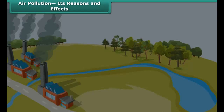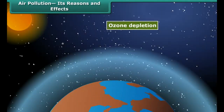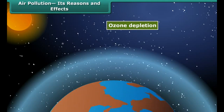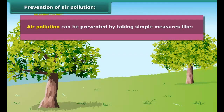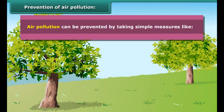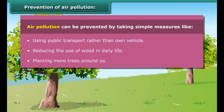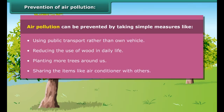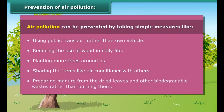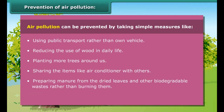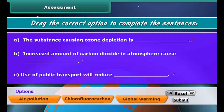Air pollution also creates global problems such as ozone depletion by gases like chlorofluorocarbon and global warming by carbon dioxide. Air pollution can be prevented by using public transport rather than a personal vehicle, reducing the use of wood in daily life, planting more trees, sharing items like air conditioners, preparing manure from dried leaves and other biodegradable wastes rather than burning them, and reducing the use of perfumes and deodorants.